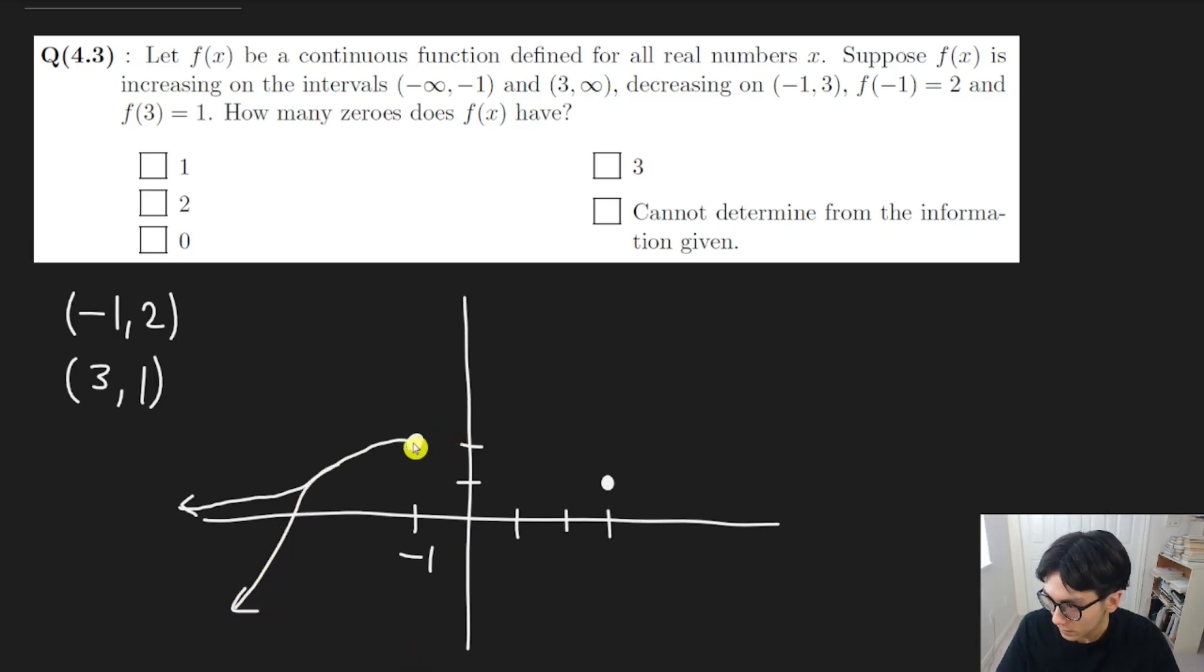On the other hand, from negative 1 to 3, it's going to be decreasing. The function is going to be decreasing. That means that the function has to decrease from 2 to 1, and it has to do that continuously. What I mean by that is it can't go down and then back up, or up and back down. It has to be decreasing the whole way. And for this reason, we know there's no zero in between this interval, negative 1 to 3.